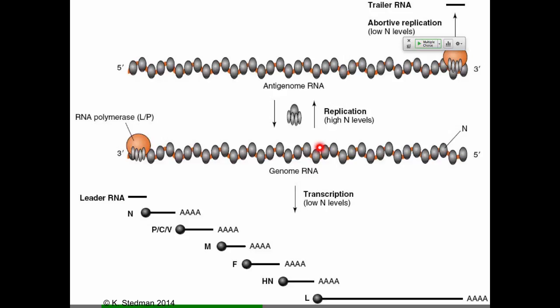At low concentrations of N protein — when you've just started making messenger RNAs — you're going to continue making all these messenger RNAs, eventually make the L protein, which is the RNA-dependent RNA polymerase. Over time, you make more and more N protein, which eventually leads to coating of the RNAs. Once the RNAs are coated, the RNA polymerase binds at the 3' end and keeps going all the way through the opposite end of the genome, producing an anti-genome. This anti-genome then serves as a template to make even more genome sequence. This is the balance of messenger RNA versus genome sequence, and it's all about the N protein.